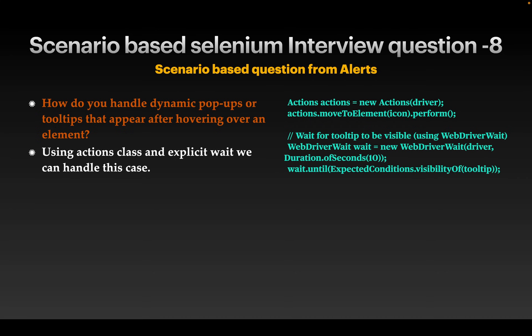Next question: how do you handle dynamic pop-ups or tooltips that appear after hovering over a web element? Using the mouse you hover over a web element and a dynamic popup or tooltip appears. We can use the Actions class along with explicit waits to handle this. Declare Actions, use explicit wait for the tooltip to appear, then click, get text, or perform whatever actions are needed.